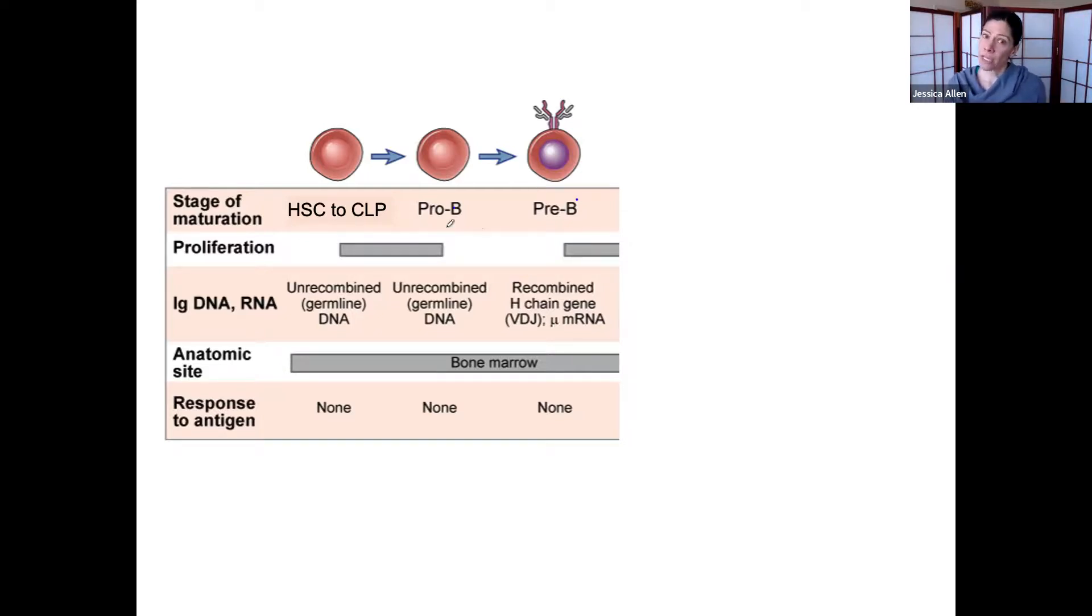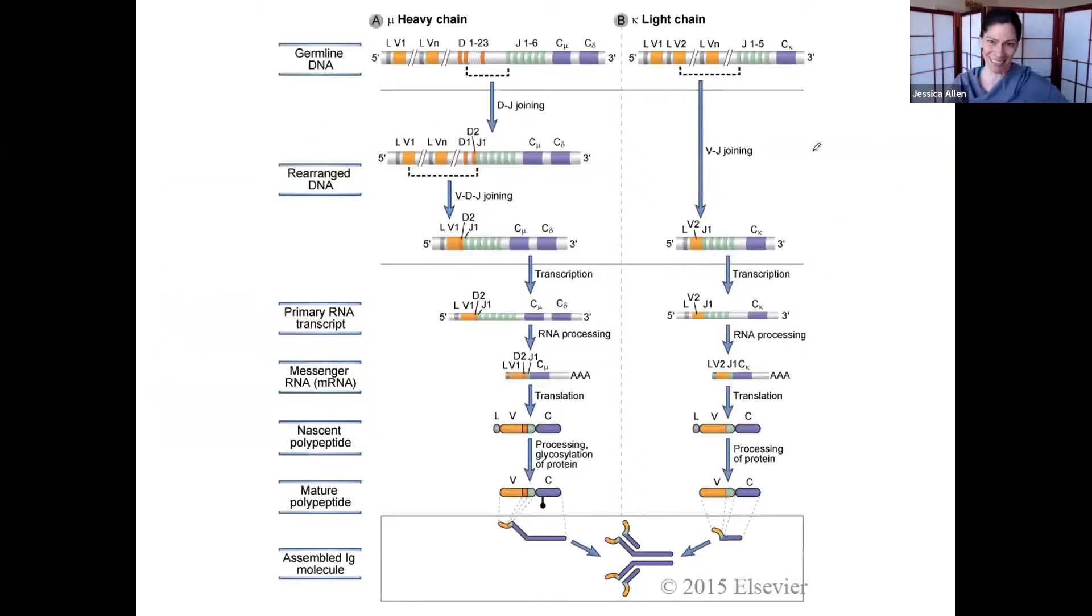A pro-B cell has the nod. A pre-B cell has at least passed some of its classes. Pretty good. Basically, it has been able to make a heavy chain that can make it to the cell surface and bind with the appropriate things. Time to do the other chain now.